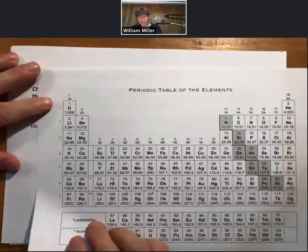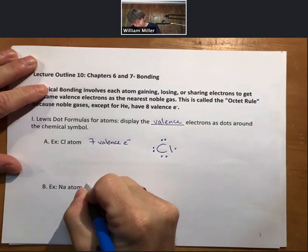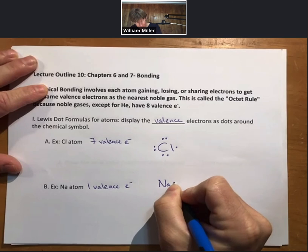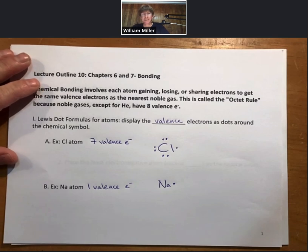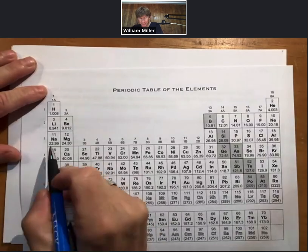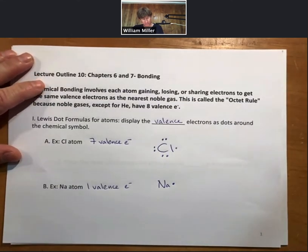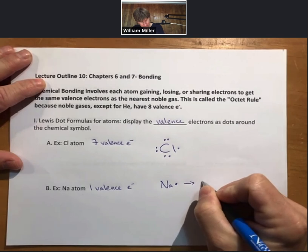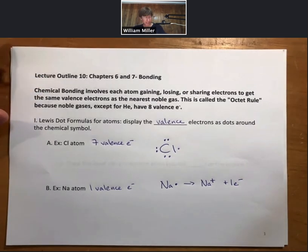Sodium, on the other hand, is in group one, meaning it has one valence electron. In a Lewis dot formula, it has one dot. It wants to get an octet similar to the closest noble gas, which for sodium is going backwards to neon. So sodium will lose an electron to become sodium plus, in something reminiscent of an oxidation half reaction.